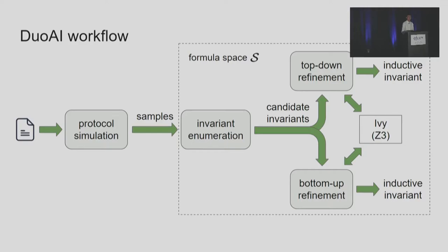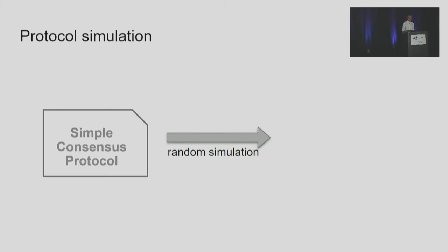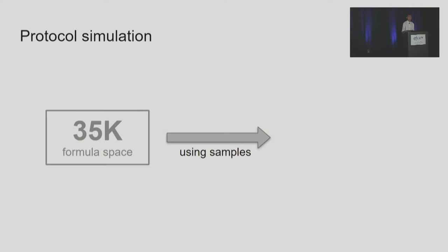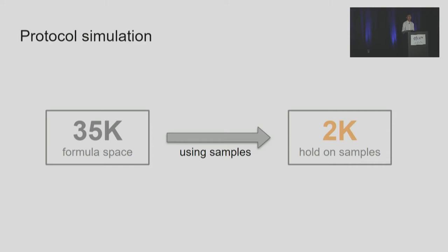For protocol simulation, given the distributed protocol, we do random simulation and record the execution traces, getting a set of protocol states called samples. Any correct invariant must hold on all protocol states, so it must hold on all samples. We can use these samples to quickly filter out most incorrect invariants. For the simple consensus protocol, among the 35,000 candidate formulas, only around 2,000 hold on the samples — a big reduction in the search space.